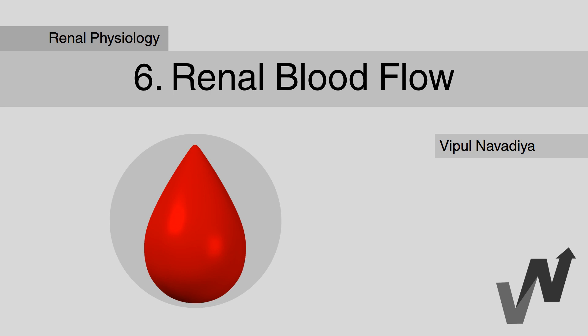From this video onwards, we will learn about physiology of urine formation, which starts with blood coming into the kidneys. So let's learn about renal blood flow.